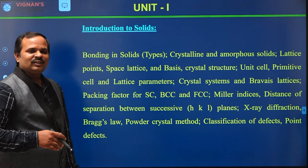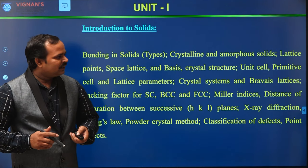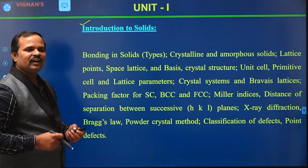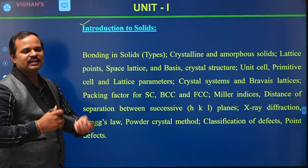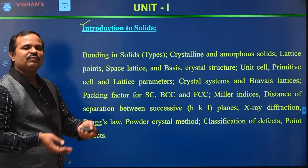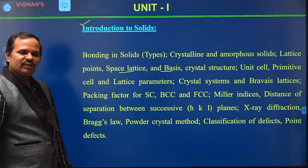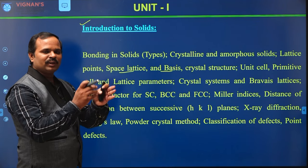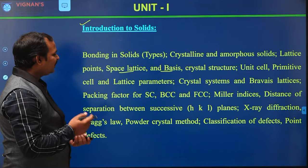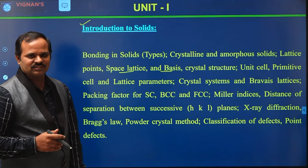Coming to the course units, we have divided this course into five units. In the first unit, we discuss mostly crystalline solids. We start with bonding in solids, the various types of bonding between atoms. Followed by the differences between crystalline and amorphous materials, and we visualize crystals using simple concepts of lattice and basis, and using the unit cell, understanding the lattice parameters. We also discuss various Bravais lattices in two and three dimensions.